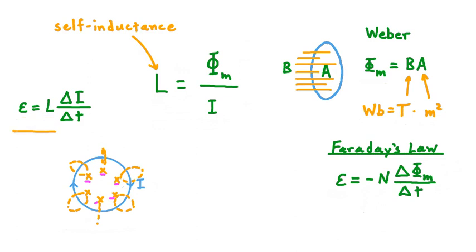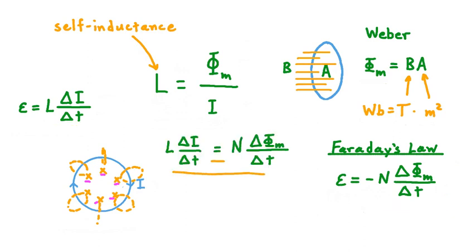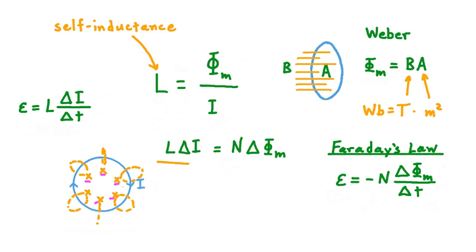Knowing this, we can combine this relationship with Faraday's law. We'll consider the magnitude of the EMF induced, so we can neglect the minus sign. Since EMF equals L times delta I over delta t, and its magnitude also equals N multiplied by the change in magnetic flux divided by the change in time, we can equate the right sides of those two equations. On both sides we have delta t in the denominator, so multiplying both sides by delta t cancels that time interval. This gives us another way of expressing inductance.